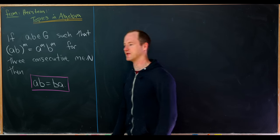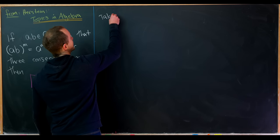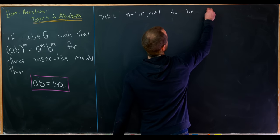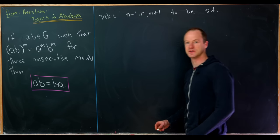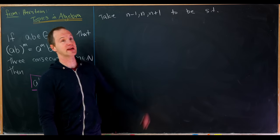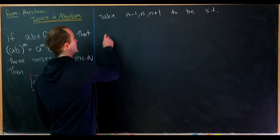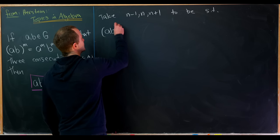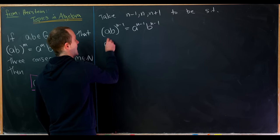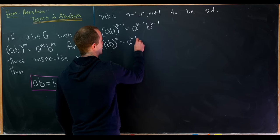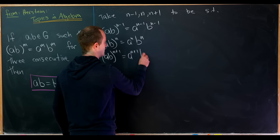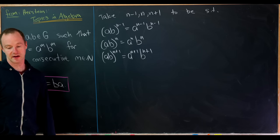Let's take n-minus-one, n, and n-plus-one to be the three consecutive values for which this holds. So we can write: (ab)^(n-1) equals a^(n-1) b^(n-1); (ab)^n equals a^n b^n; and (ab)^(n+1) equals a^(n+1) b^(n+1).